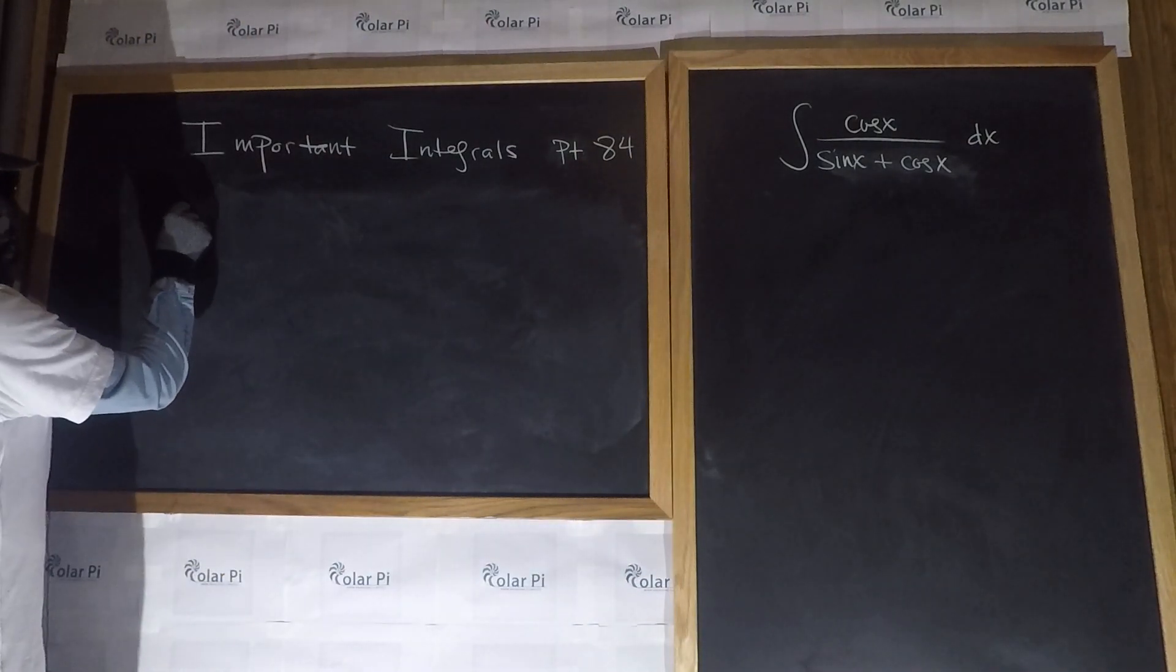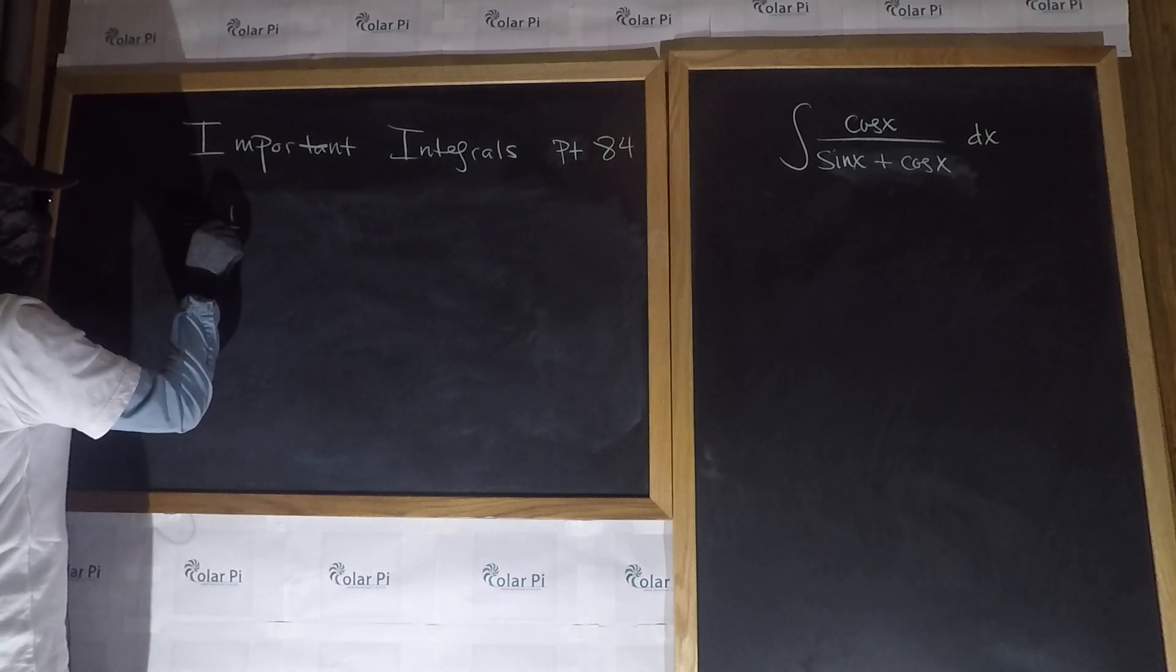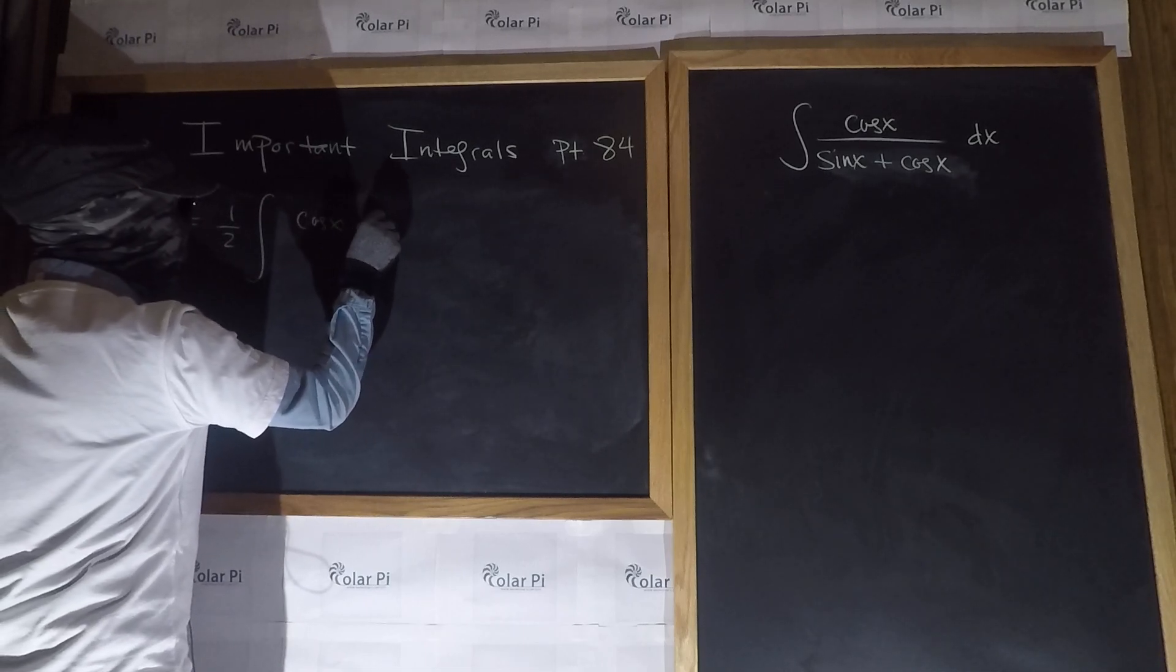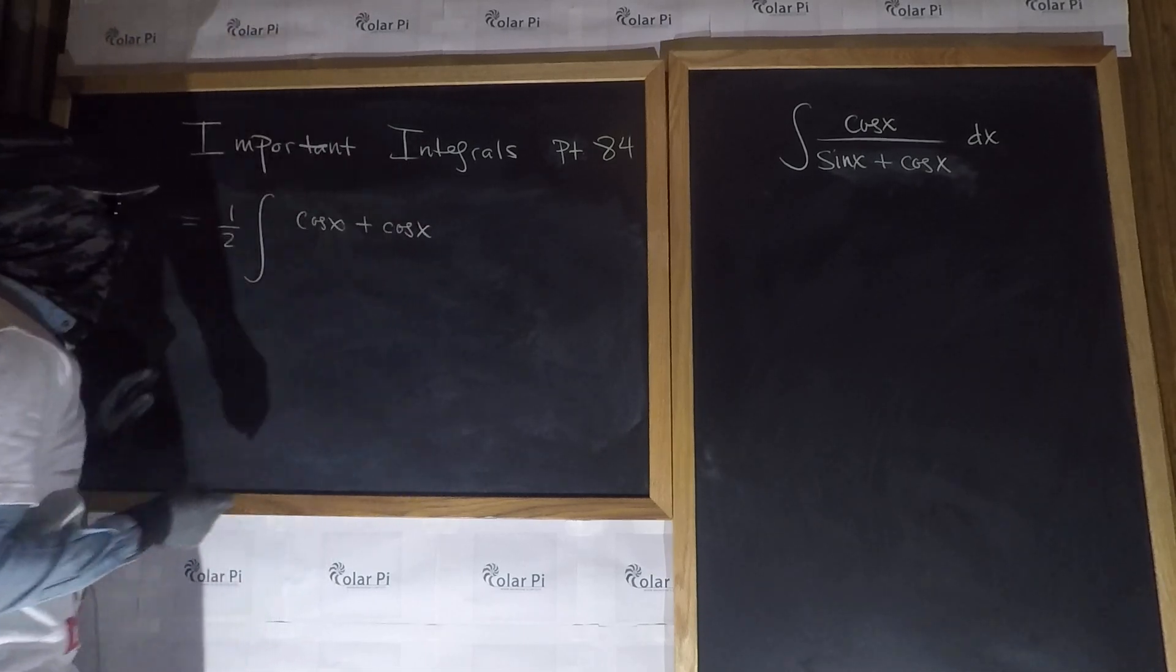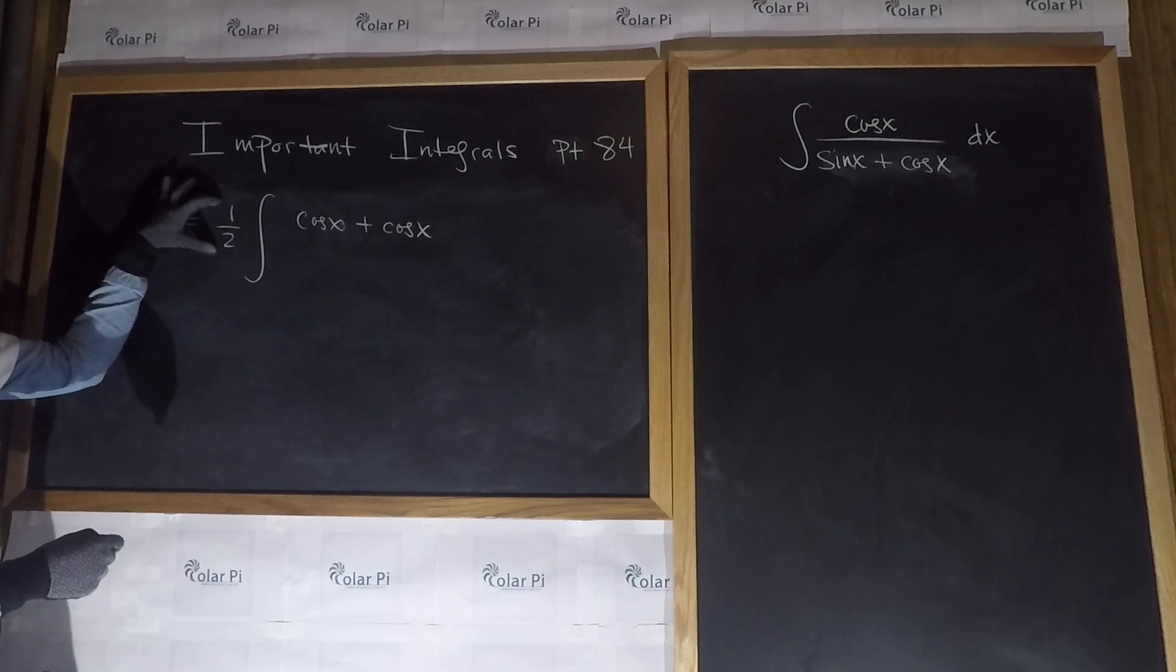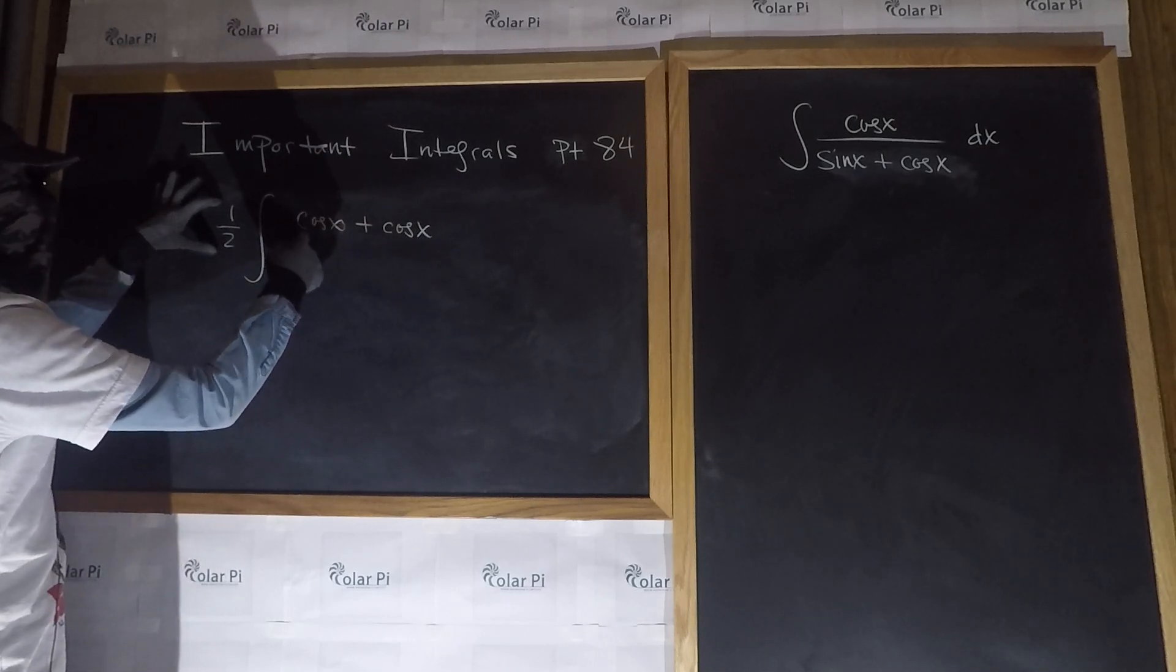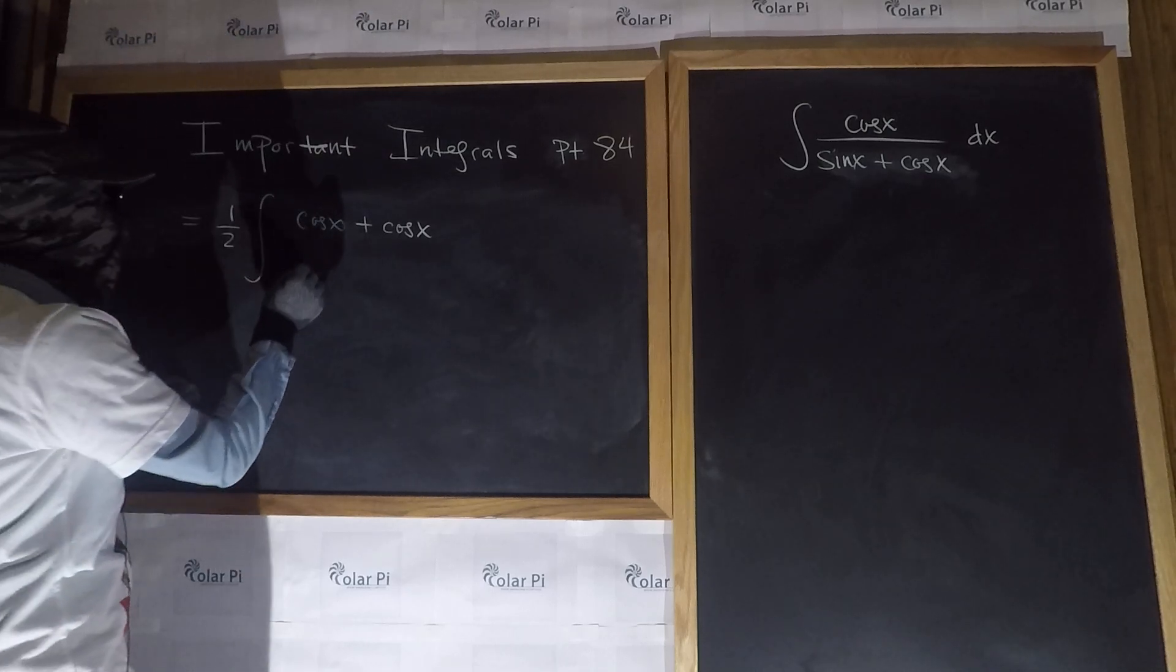So this is what we can do. We could write the given integral as a half and then integral cos x plus cos x. Obviously, I need to write more, but now let me justify why this half, because we only had a cos x. Now we have two cos x. Two cos x times a half is still cos x.